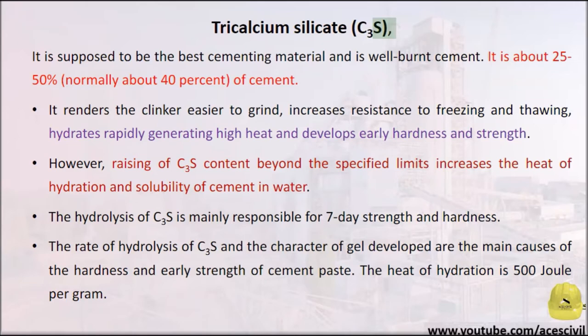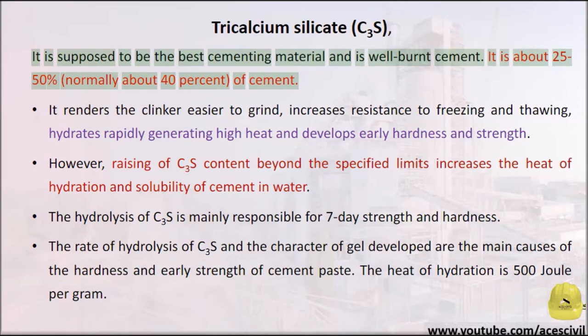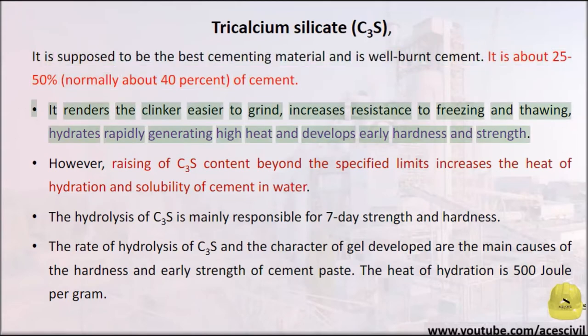Tricalcium Silicate (C3S) is supposed to be the best cementing material and is well burnt cement. It is about 25–50%, normally about 40%, of cement. It renders the clinker easier to grind, increases resistance to freezing and thawing, hydrates rapidly generating high heat, and develops early hardness and strength.